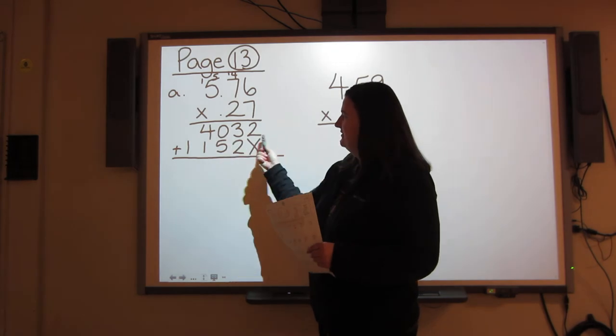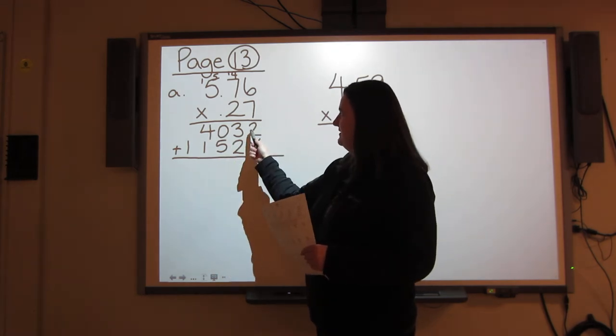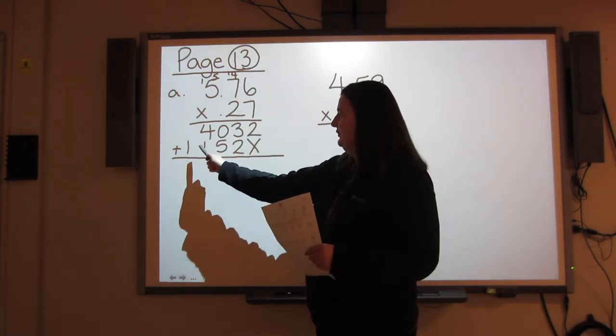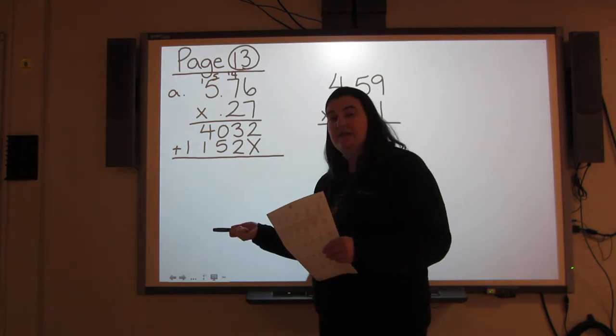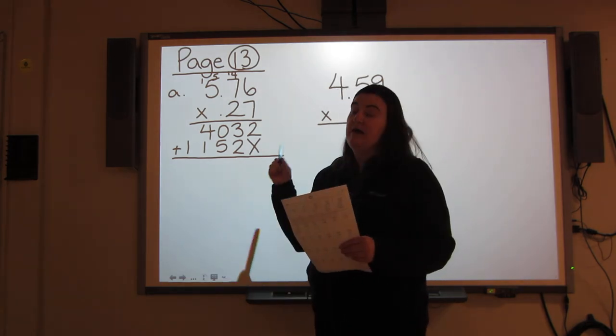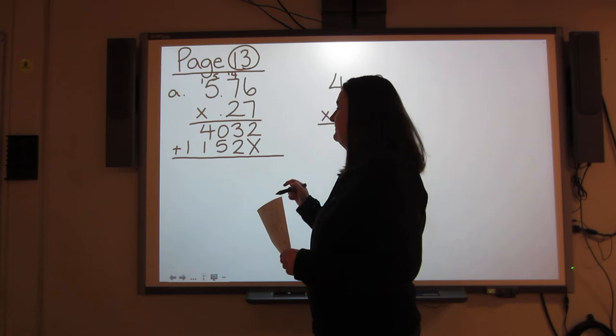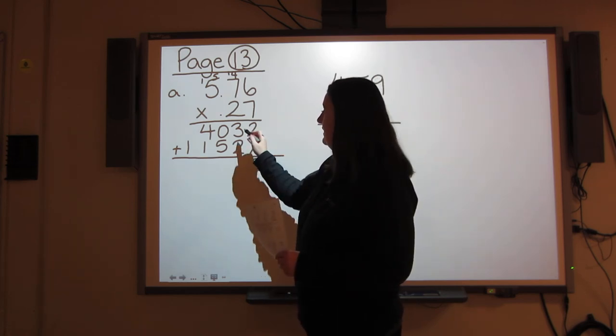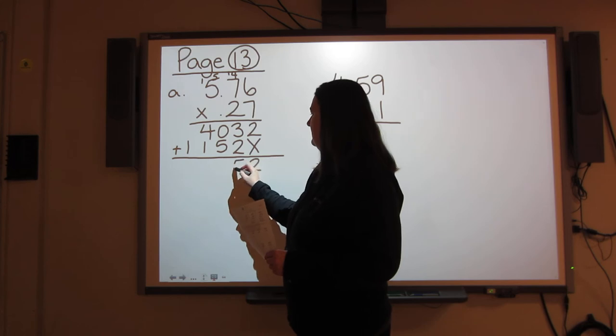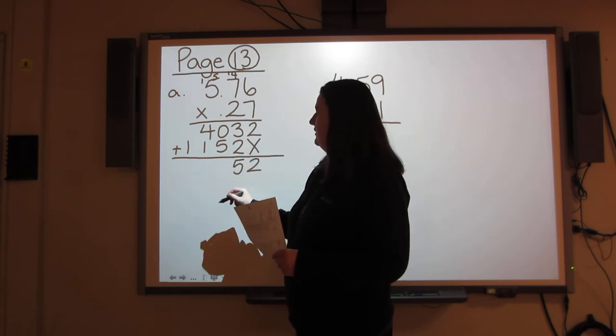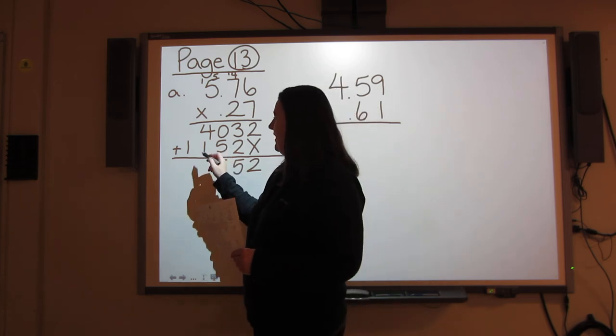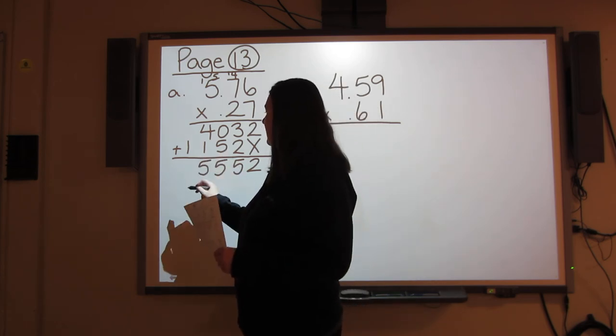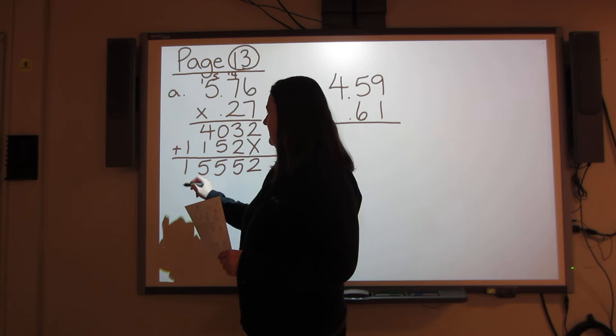Now I have two lines of answers, one from the 7 and one from the 2. I'm going to add them up together. I still have not put my decimal in yet. 2 plus nothing is 2. 3 plus 2 is 5. 0 plus 5 is 5. 4 plus 1 is 5. And 1 plus nothing is 5.